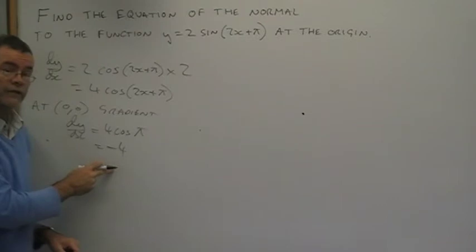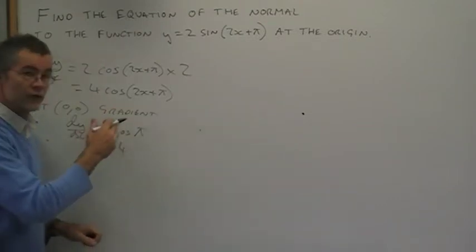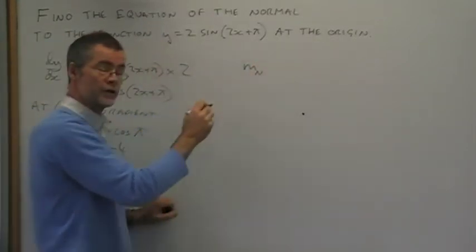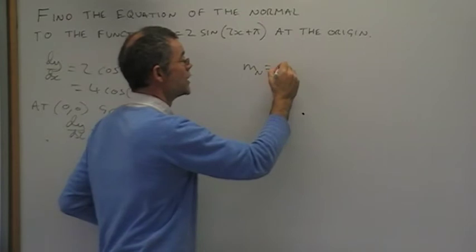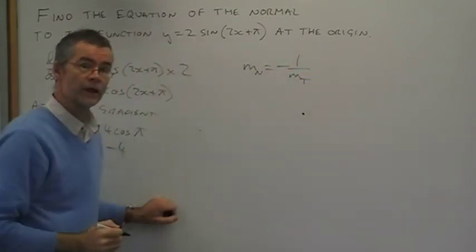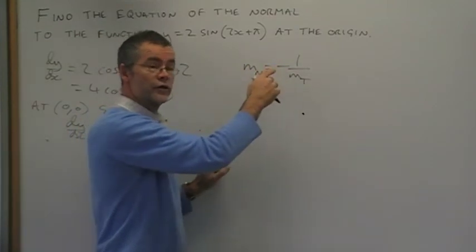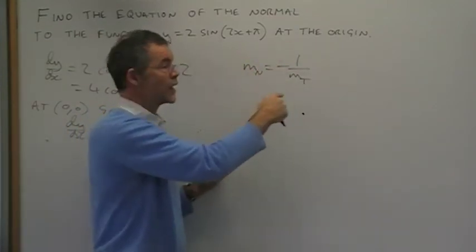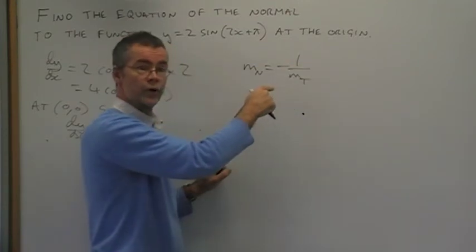Now we need to find the gradient of the normal at the origin. We use this relationship: the gradient of the normal, m representing the gradient, is equal to negative 1 over the gradient of the tangent. That is because the normal and the tangent are perpendicular to each other, they cross at right angles, and this relationship is true of perpendicular lines.